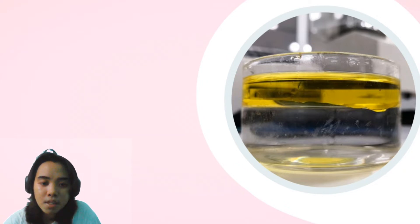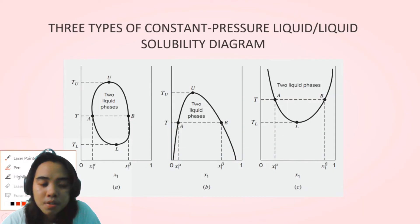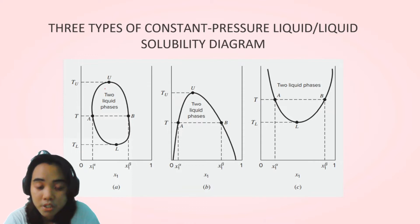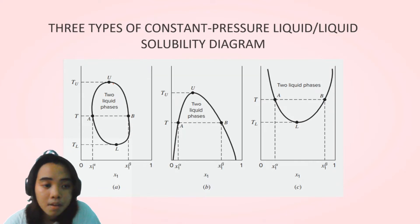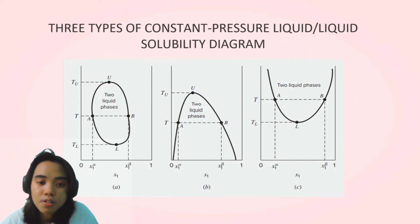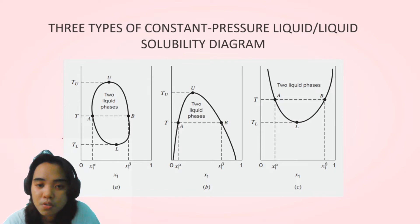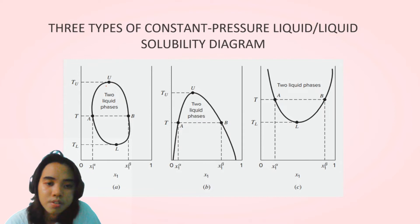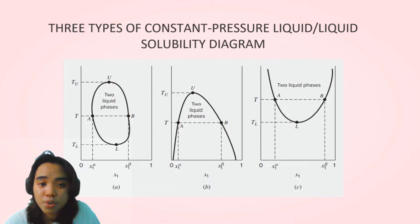This is where the concept of liquid-liquid equilibrium happens. In liquid-liquid equilibrium, we are given three types of constant pressure liquid-liquid solubility diagrams, which describe different systems at different temperatures or compositions. At constant pressure — or where pressure effects are negligible — we can use this solubility diagram to look at the phases and what happens when we increase or decrease the temperature.